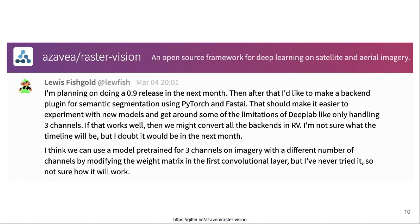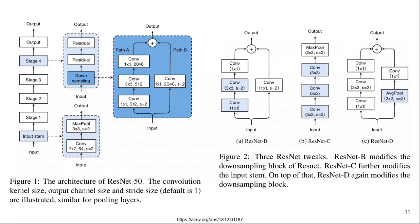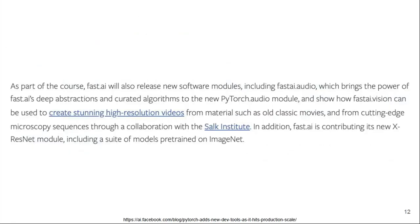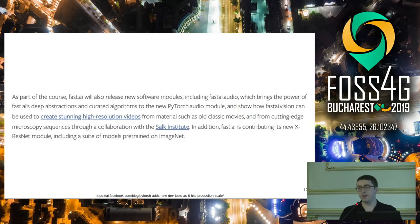FastAI comes to the rescue again because they have a modern extended version of ResNet called XResNet, which has improvements including better, faster, more efficient training. The FastAI version of XResNet allows you to input any number of channels — one, three, five — and that's built in. This model starts from scratch without pre-trained weights, but it solves the problem of handling multiple bands. Down the road, FastAI is planning to contribute back to PyTorch models pre-trained on ImageNet. For now, we have a roadmap to take four- or six-channel data, use the XResNet, pre-train it on Big EarthNet, and then apply it for a downstream task.